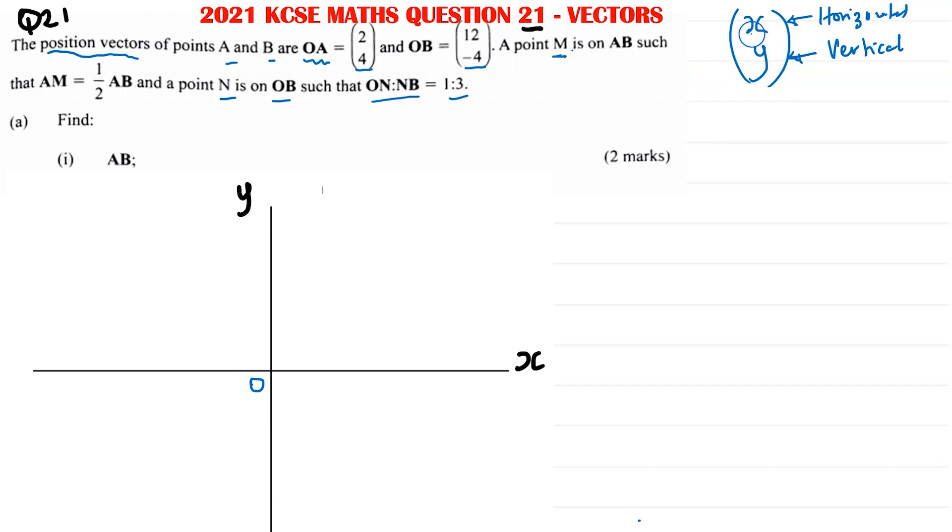If it is negative for x, it means it's moving left. If it's positive, it's moving right. For y, if it is positive, it's going up and if it is negative, something is moving down. So with position vector OA, it's moving 2 to the right, 4 up. So if we start from the origin, because it is a position vector, we're going 2 steps to the right and then 4 up.